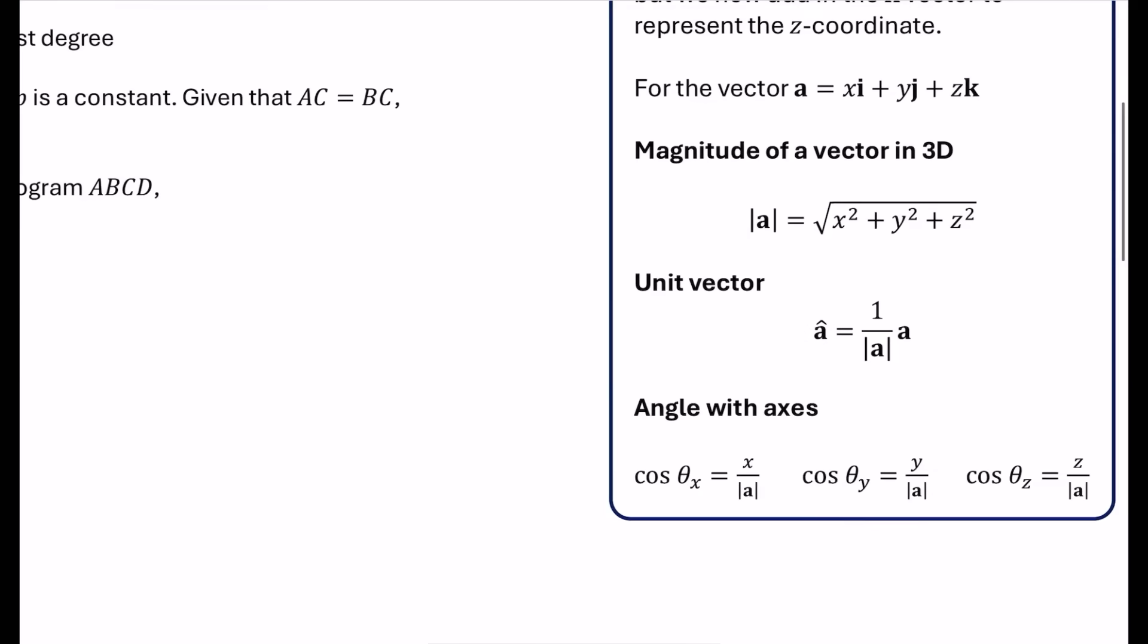And then this is something that has been added into the specification. I say added in as though you would have known this before, but the specification changed back in, I think, 2018, 2019. And I have never seen them examine the angle with the axes, but they might ask at some point, if you've got a vector, what angle it makes with the coordinate axes. So this would be theta x is the angle that it makes with the x-axis, the y-axis, and the z-axis. The x, the y, and the z, they are the different components of the vector. We've got the magnitude of the vector, the modulus of the vector, and it's the cosine of that angle.